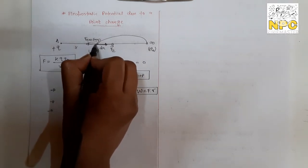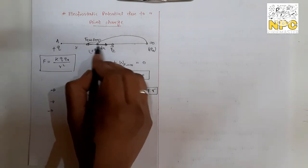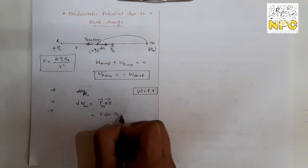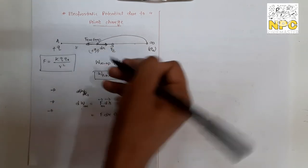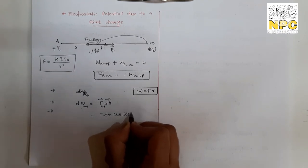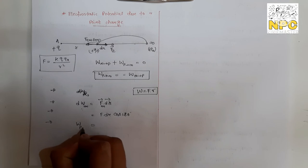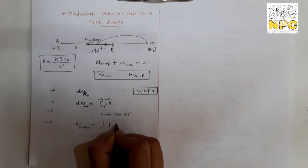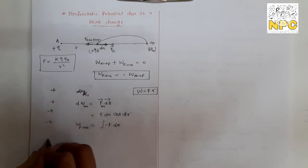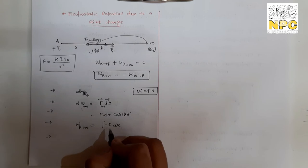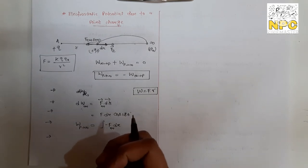Direction matters here. The work we compute is for the external agent, so force is by the external agent. The displacement DR is in one direction and the external force is in the opposite direction, so the angle is 180°. Therefore dW = F·dR·cos180° = −F·dR. Total work done from P to infinity is the integral of −F·dR, where cos180° = −1.